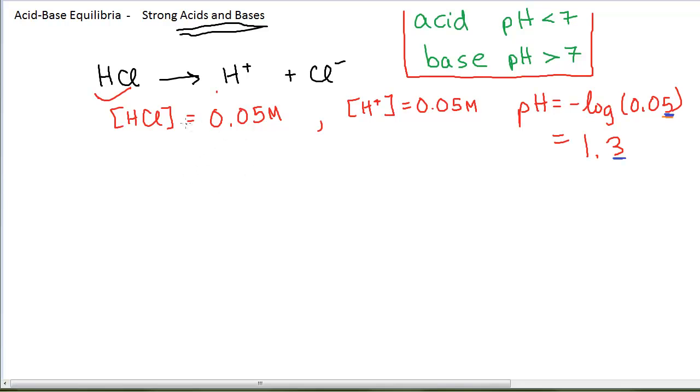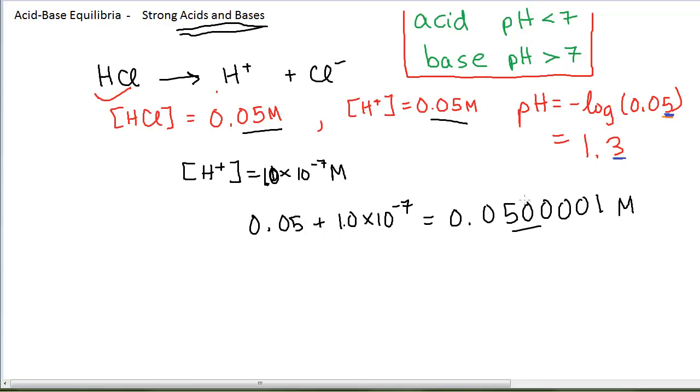Now, technically speaking, this 0.05 molarity of HCl giving us 0.05 molarity of H+, is in addition to the H+ that the water contributes. Remember that the H+ in pure water is 1 times 10 to the minus 7. It's actually 1.0 if we want to worry about sig figs. That's how much we get from pure water. Now, if we had this in addition to the 0.05 molarity from the hydrochloric acid, and you punch that on your calculator, you get this concentration of hydrogen ions. To 1 or 2 sig figs, it is essentially the same concentration as we got simply by taking the HCl.